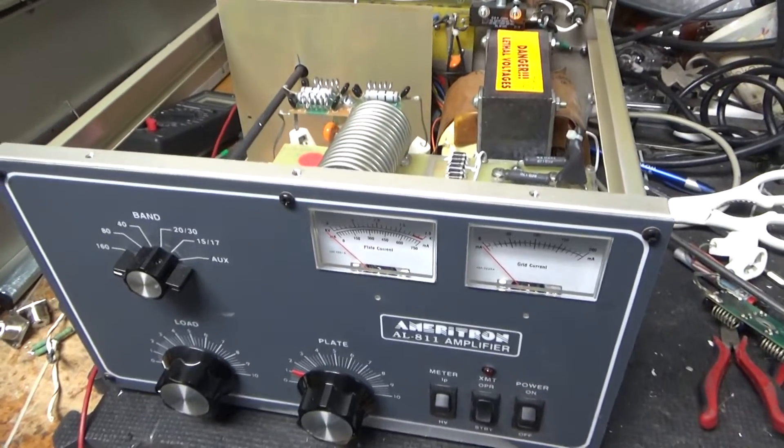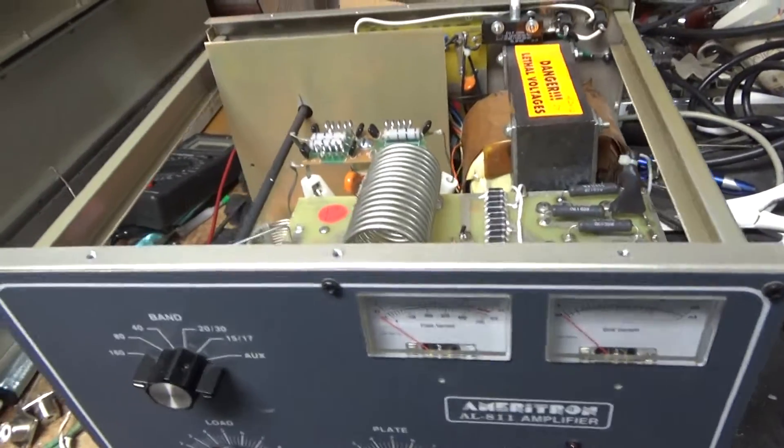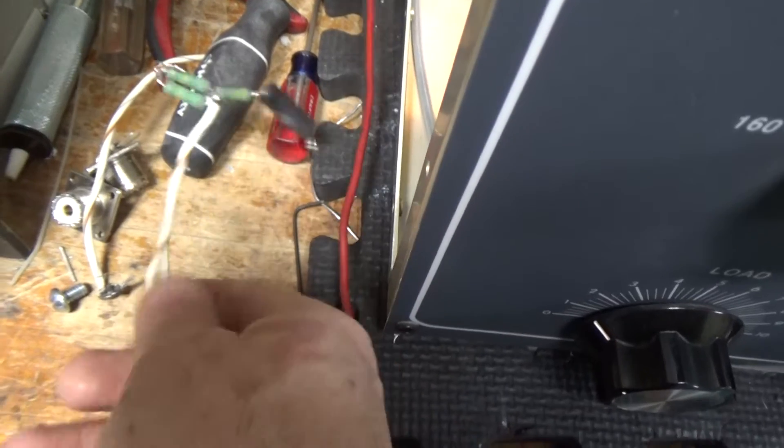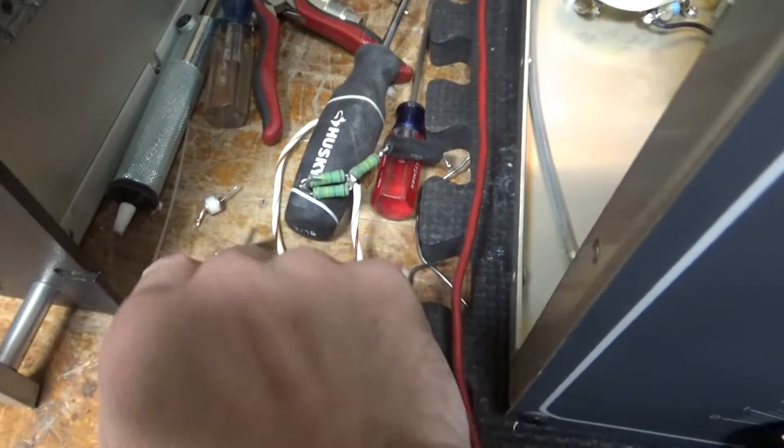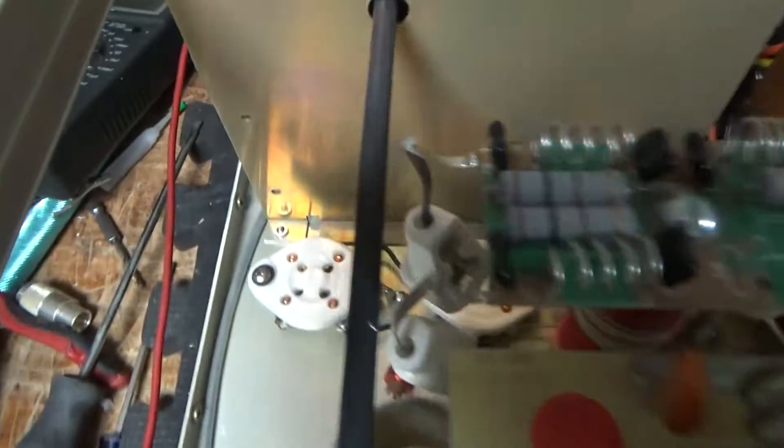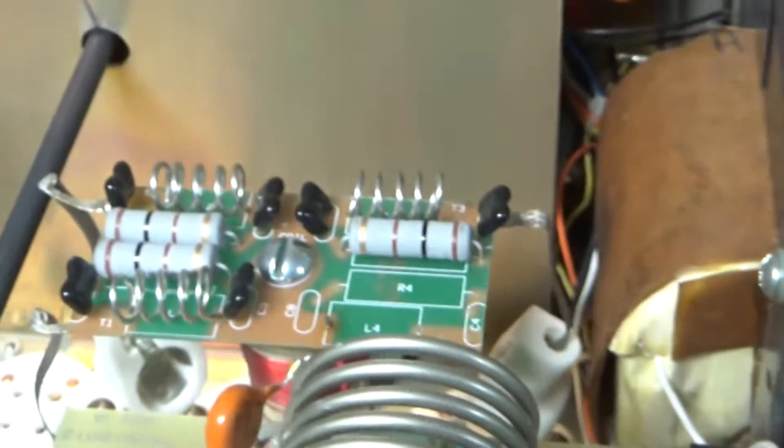Okay, so I'm back with the completed Ameritron AL-811. Had to replace both fuses, took out the bias mod someone tried to do, put the longer screw in for the plate choke, changed the SO-239 connectors, and took out the old gas discharge tube. Replaced that gas discharge tube with two brand new ones, put a new parasitic board in there. Here's the old one.